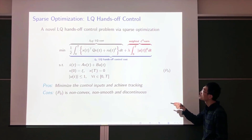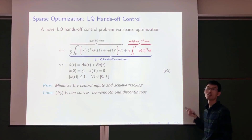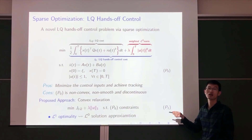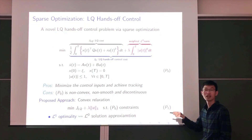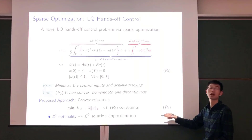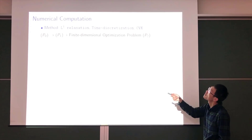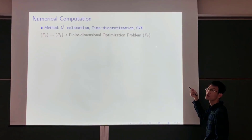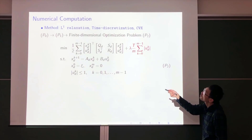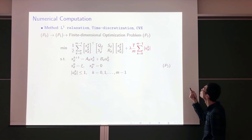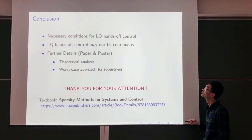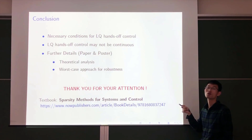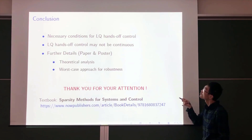We propose a novel LQ tracking control problem based on sparsity promotion. The LQ tracking cost combines a weighted L0 norm and LQ cost. Problem zero minimizes control input while achieving tracking. However, problem zero is non-convex, non-smooth, and discontinuous due to the L0 penalty. We therefore propose a convex relaxation to obtain an approximation Problem 1. We also consider a numerical method using L1 relaxation, time discretization, and MATLAB toolboxes, converting problem zero into a finite-dimensional approximation Problem 2. Simulations show the effectiveness of our proposed control.